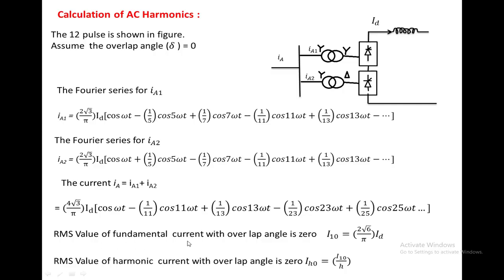The RMS value of the fundamental current with overlap angle equal to zero is: I₁₀ = (2√6/π)·Id, where the subscript 1 represents the fundamental current and 0 represents zero overlap angle. Similarly, the RMS value of the h-th harmonic current with overlap angle zero is: Ih₀ = I₁₀ / H. For example, for the fifth harmonic, H = 5; for the eleventh harmonic, H = 11.